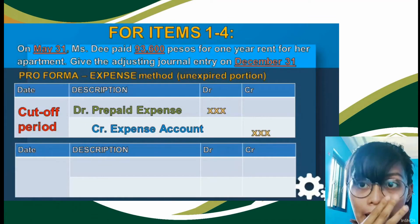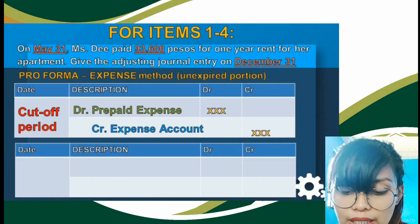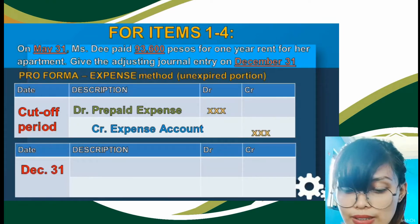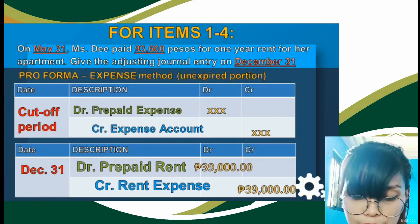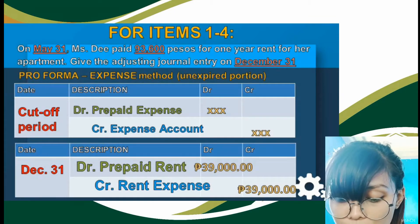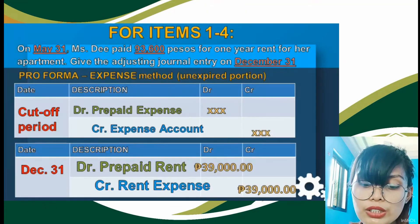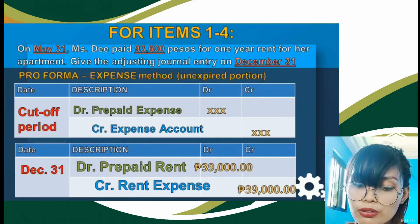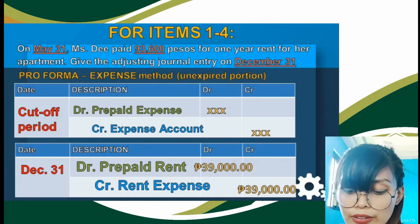For the expense method pro forma: debit prepaid expense, credit expense account. Cut-off date is December 31. Notice that the accounts are just reversed compared to the asset method, but the amounts differ. The P39,000 represents the unused portion of the payment.